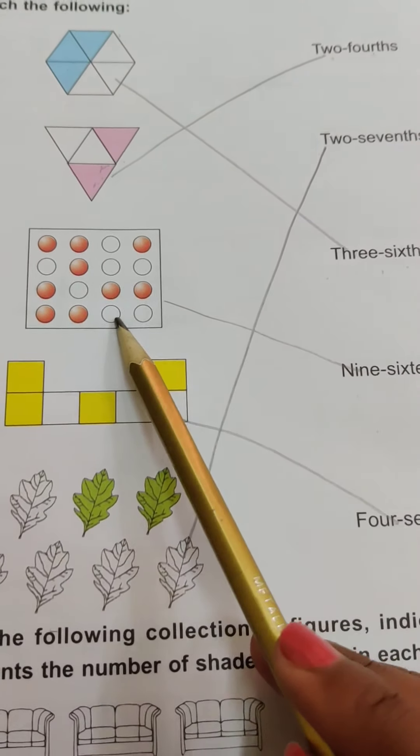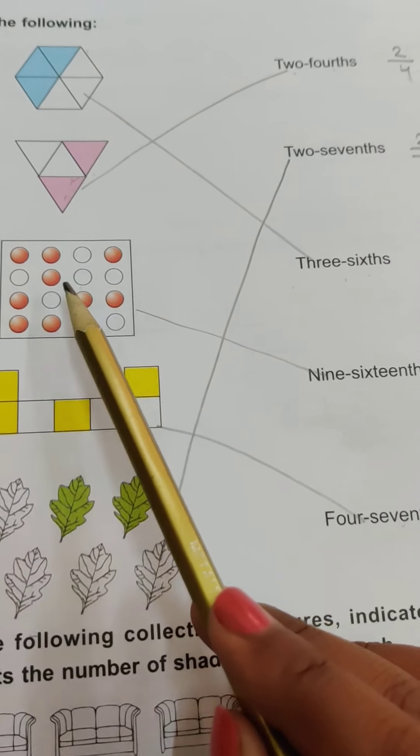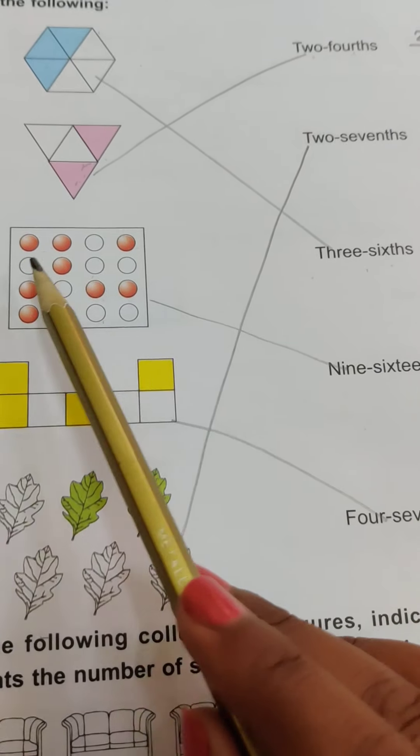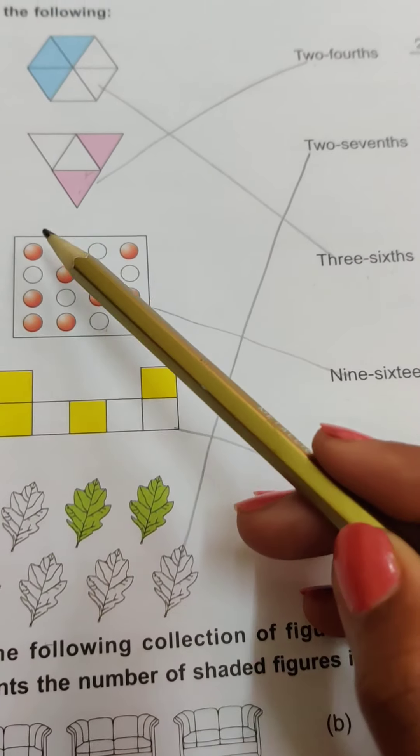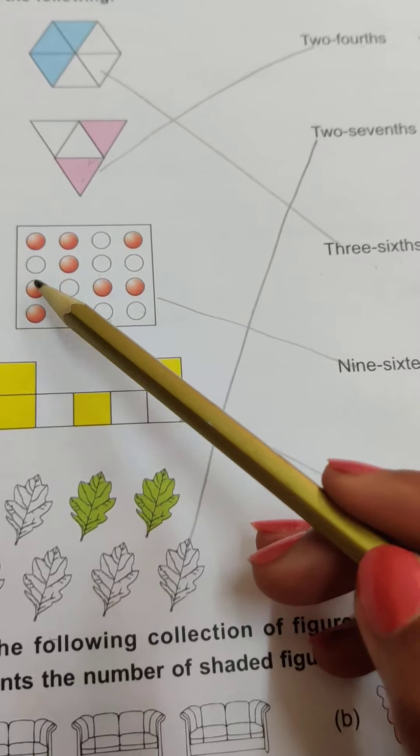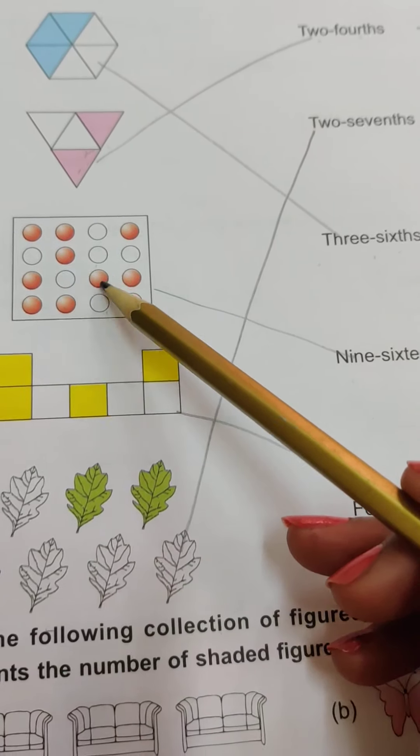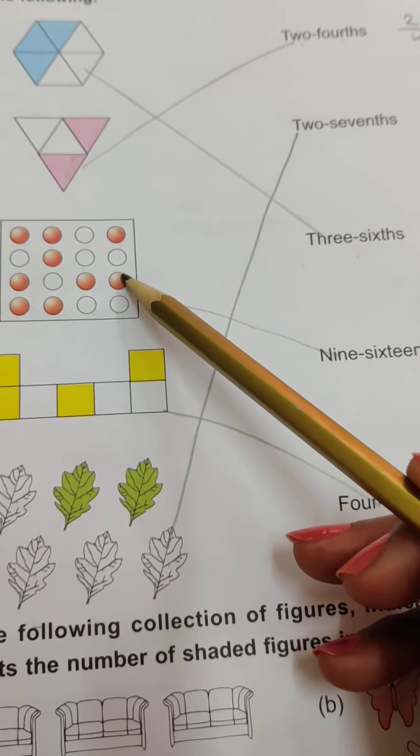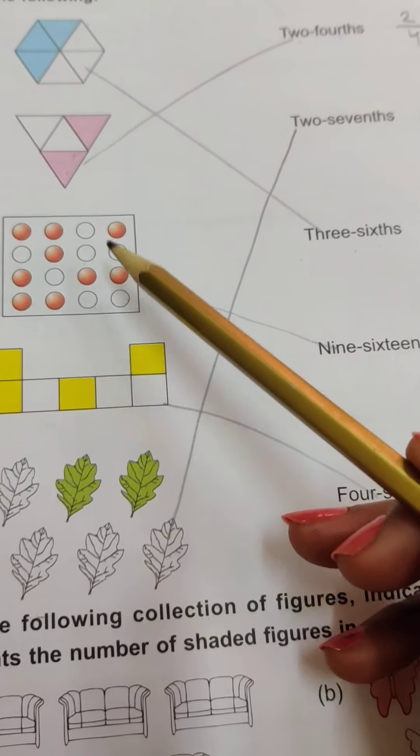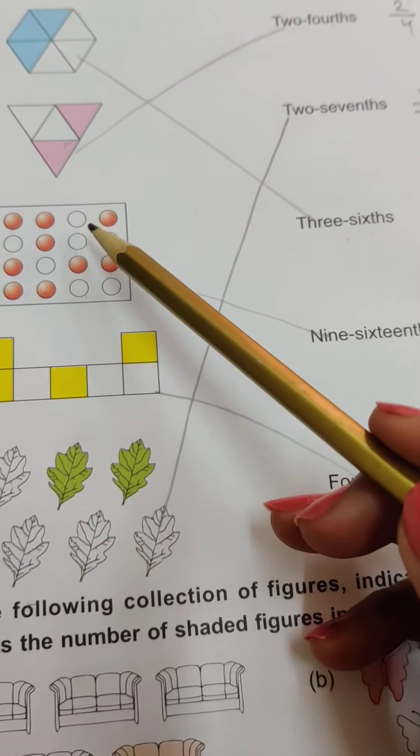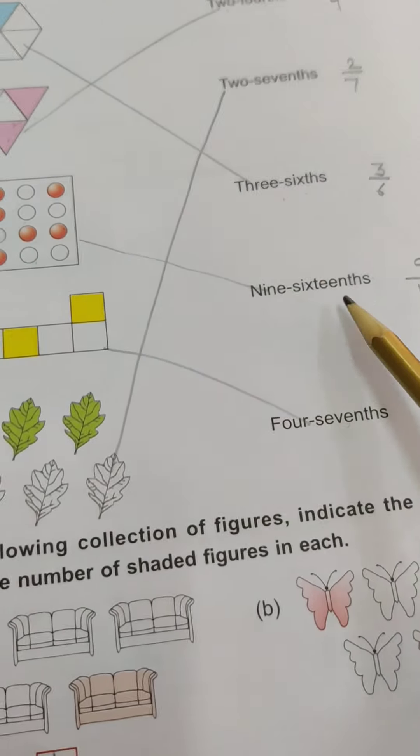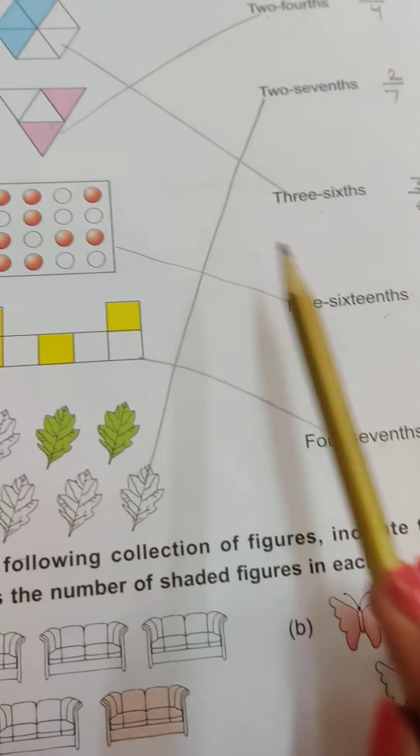Similarly, if we count in total, the circles are 16. If you count in total, total is 16. If you count which are shaded: 1, 2, 3, 4, 5, 6, 7, 8, 9, so shaded is 9. 9 out of 16 means 9 by 16 means nine-sixteenths, so it will match this.